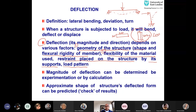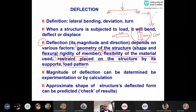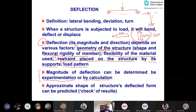The flexibility of materials means wooden structures will deflect more while steel structures will deflect less. The third factor is restraint — meaning support conditions. A beam with fixed end conditions will deflect less, but a beam with simply supported conditions will deflect more. It also depends on load pattern. The magnitude of deflection can be determined either by experiments, which is quite expensive, or by calculation. The approximate deflected shape of the structure can be predicted, and this is used to check results.